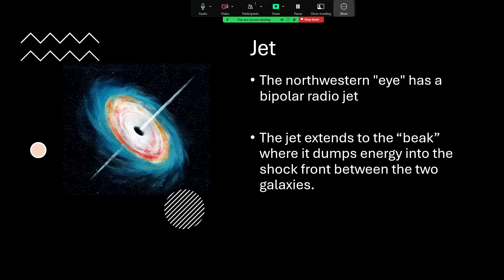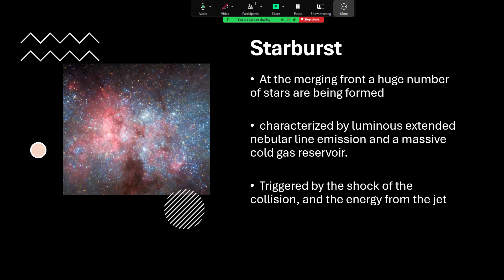That whips up charged particles into a couple of beams or jets that shoot out of the galaxy. It seems that one of those jets is actually also pointing into the shockwave front between the two galaxies and lighting it up where it dumps its energy in that region. That shockwave and the energy from the jet dumping into that region is causing this huge number of new stars to be formed, hence the blue color where we see a lot of the short-lived massive blue giant stars while they're still around.